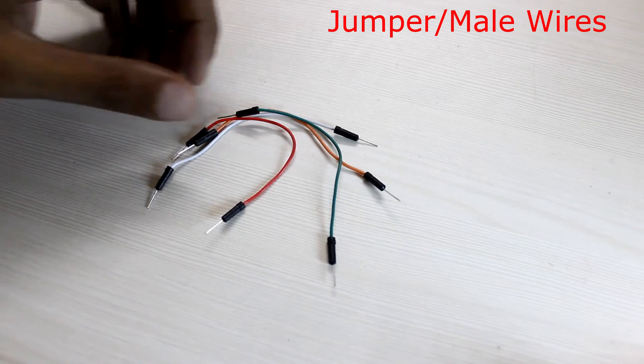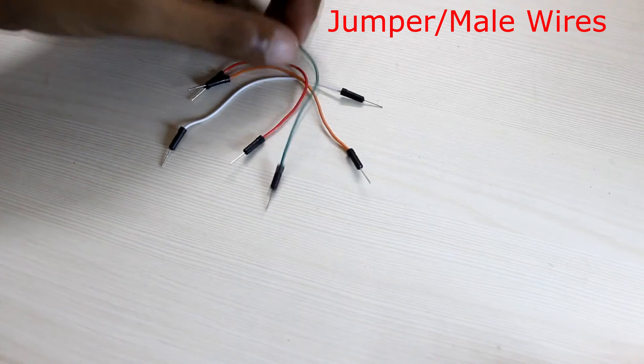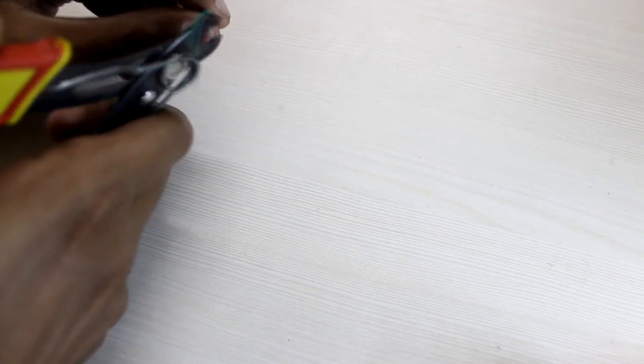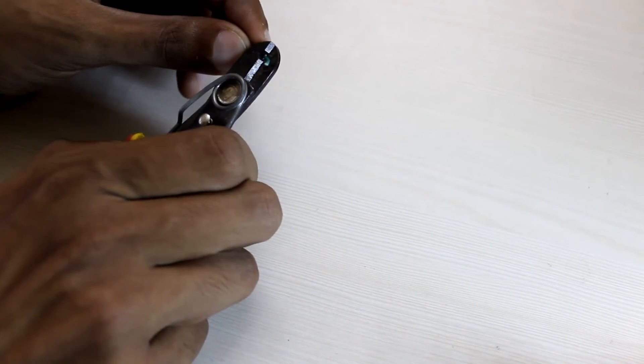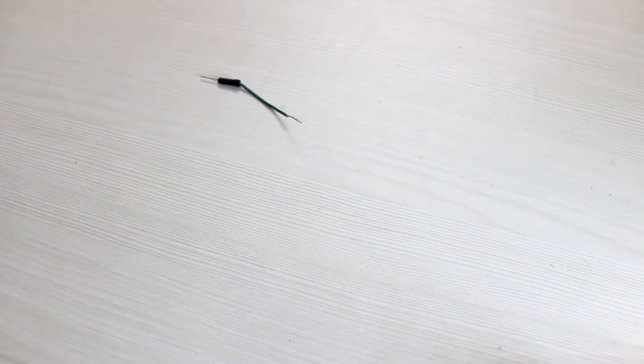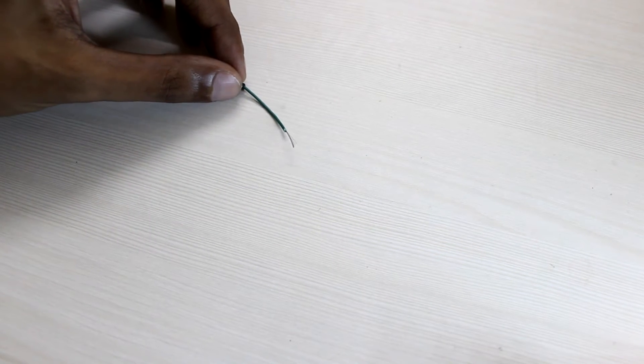We can also use male wires which look like this. These can be used to connect the circuit as well. Let us see what's inside them. Let us cut it into two first, then strip the insulation off. And as you see there is only copper inside. The copper connects the pins internally.